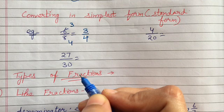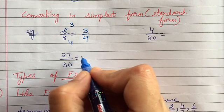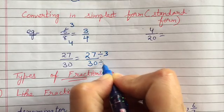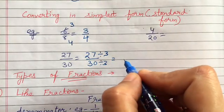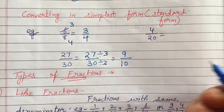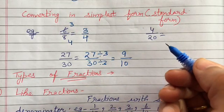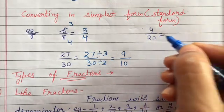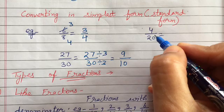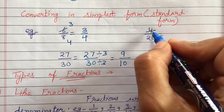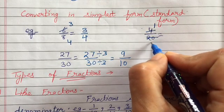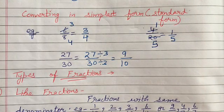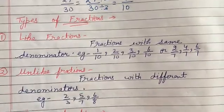Another example: 27 upon 30 — they both come in the table of 3. So dividing numerator and denominator by 3: 27 divided by 3 is 9, and 30 divided by 3 is 10. So we get 9 by 10, which has only 1 as a common factor. Next example: 4 upon 20 — 20 comes in the table of 4. So dividing by 4: 4 divided by 4 is 1 and 20 divided by 4 is 5. The answer is 1 upon 5. This is how we convert any fraction into its simplest form.